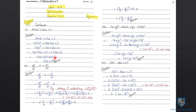अब यहां पे दो same terms आपस में multiply हो रही हैं — एक में 12A plus 1 है और दूसरे में 12A plus 1 है. तो जब दो same terms आपस में multiply होती हैं तो उनका square आ जाता है. तो यह 12A plus 1 whole square के equal होगा. यहां पे identity complete हो गई: A square plus B square plus 2AB is equal to A plus B whole square. यह हमने part 1 solve कर लिया.